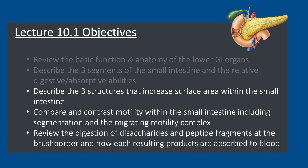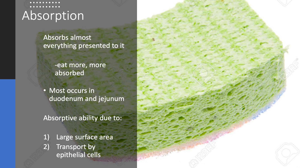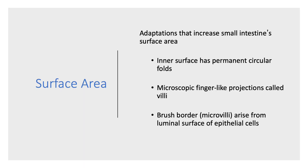Now we'll talk about how we increase surface area within the small intestine. The small intestine is very efficient — it absorbs almost everything presented to it. The absorptive ability is due to both its large surface area and transport via epithelial cells. There are three structures that increase the surface area: the circular folds, the villi, and then the microvilli, or the brush border.